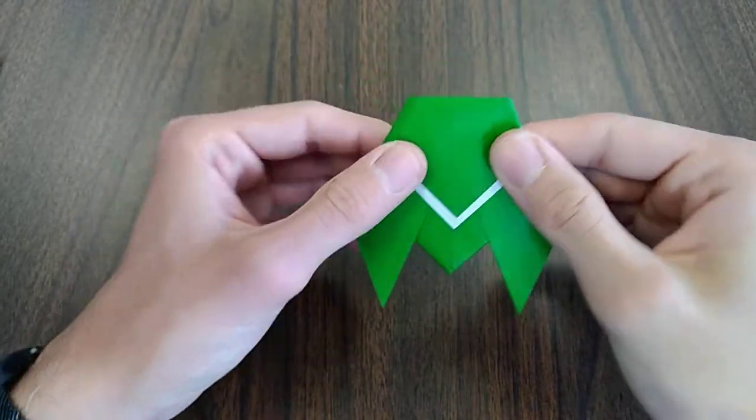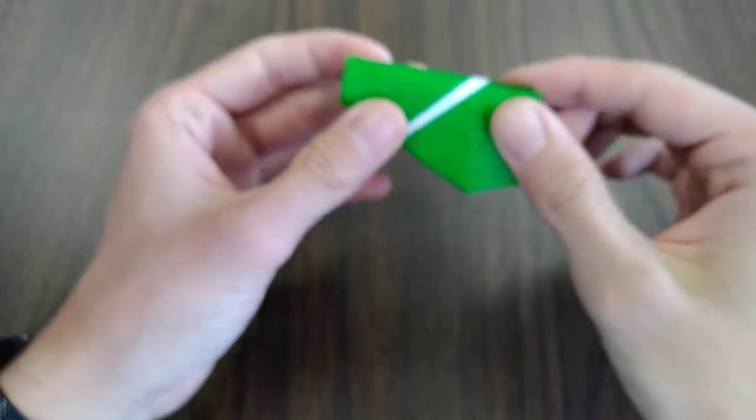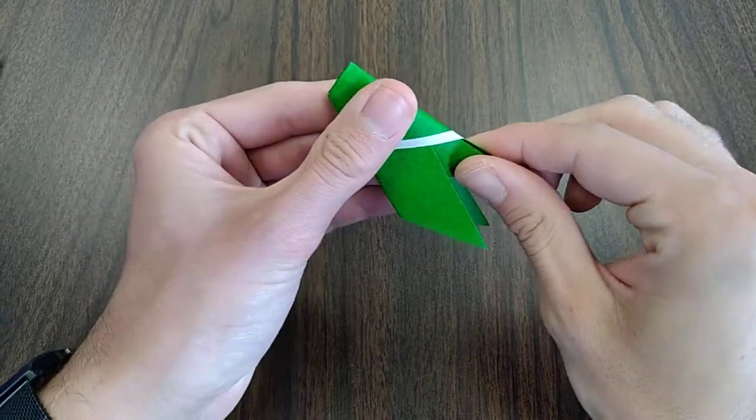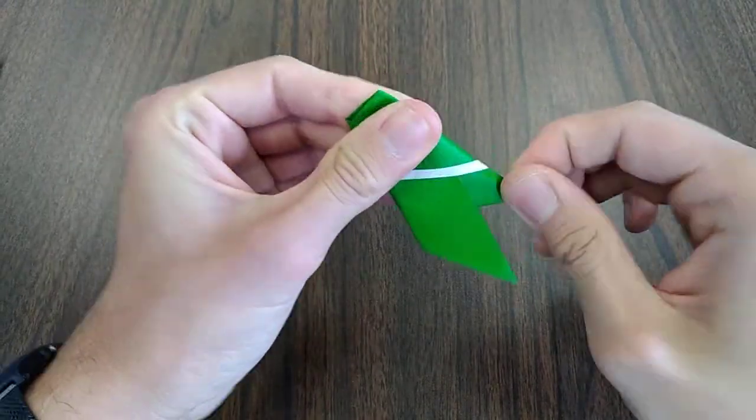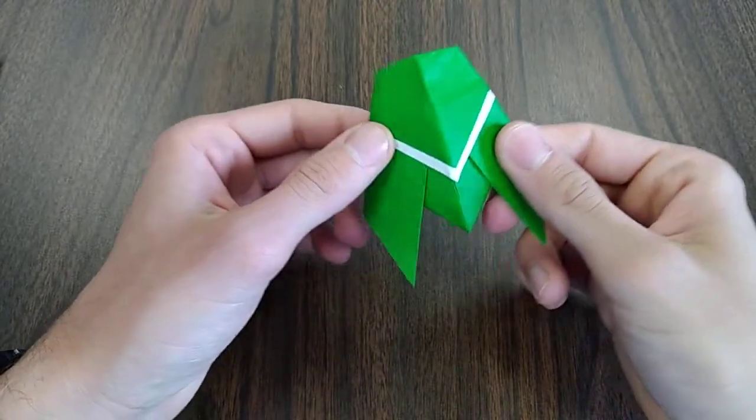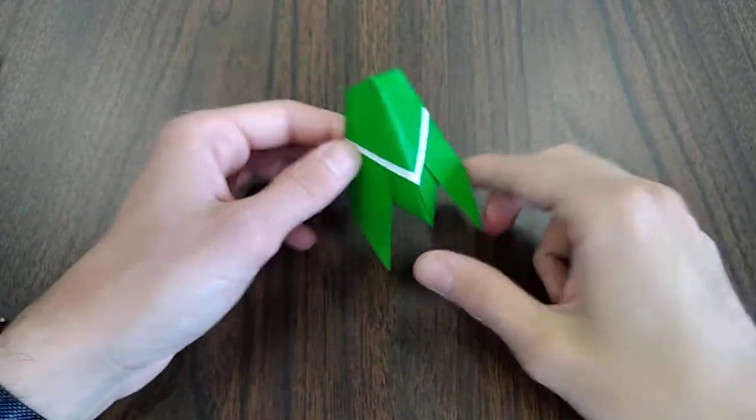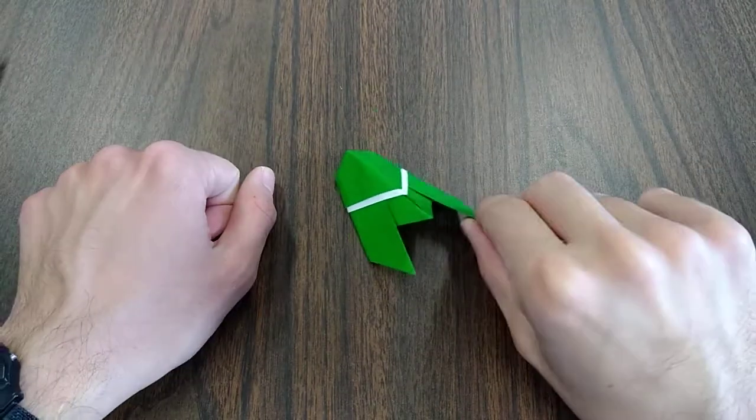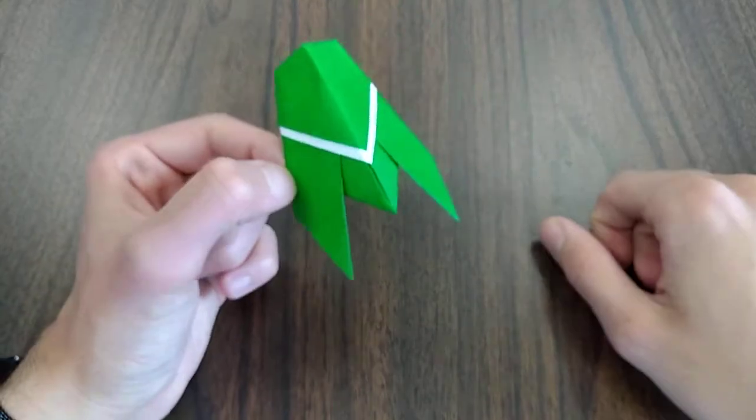Now, last step. We're going to fold the whole model in half. Fold it a little bit. And there, you have your completed origami cicada.